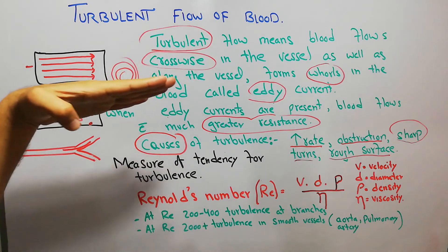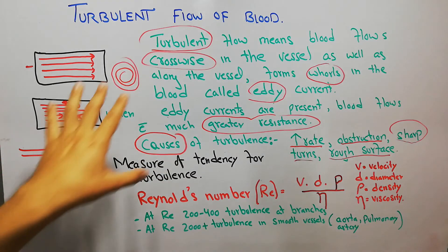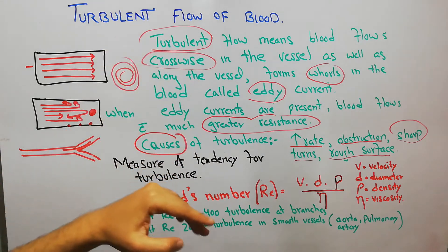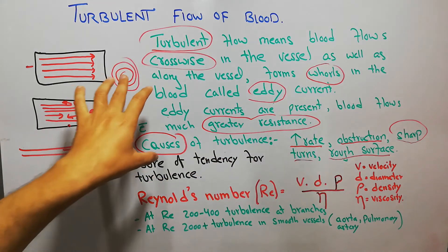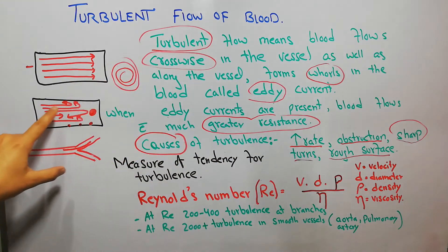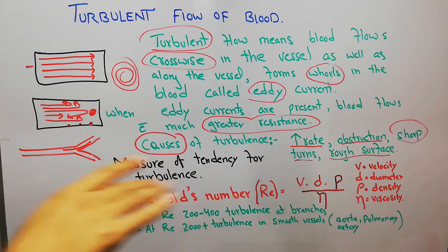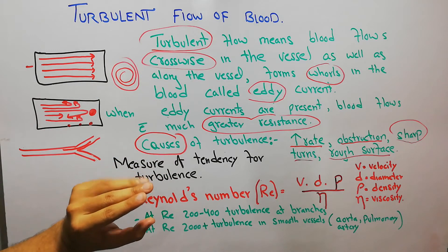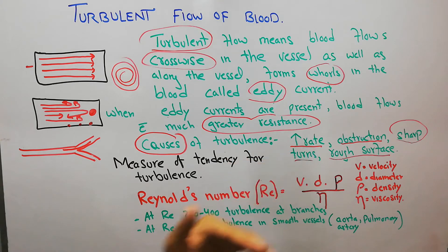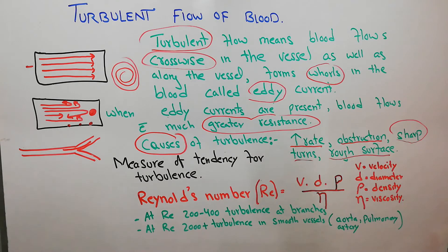To summarize, turbulent flow means blood moves not only along the vessel but also crosswise. This crosswise movement forms whorls known as eddy currents, which leads to greater resistance for blood movement. The causes of turbulence are: increased rate of blood flow, obstruction of the blood vessel, sharp turns in the blood vessel, and rough surface on the inner side of the blood vessel.